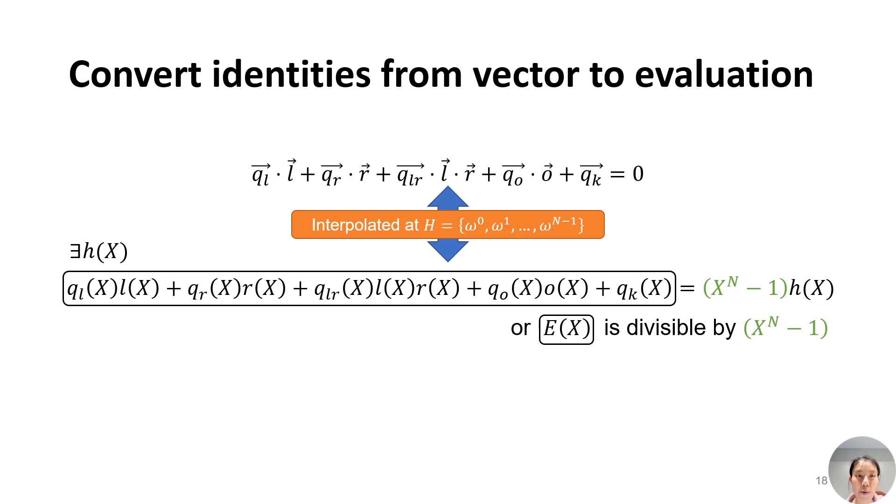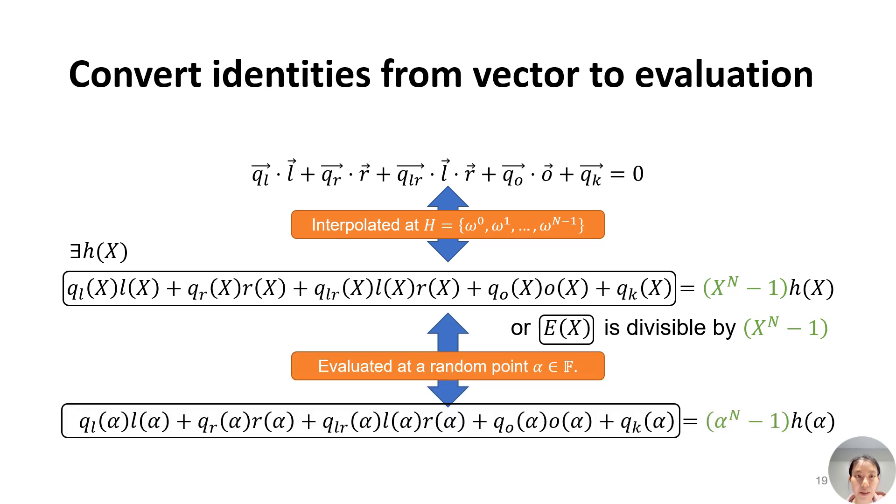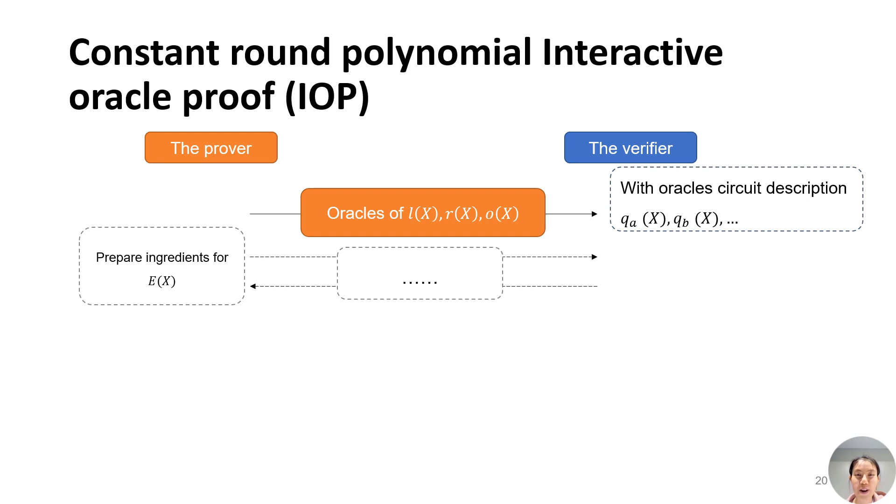From the vector identity, we construct a polynomial where each polynomial is derived from the vector interpolated on the powers of a root of unity. Then, checking the vector identity is equivalent to a polynomial argument saying that there exists some polynomial H such that the polynomial equation can be divided by X to the N minus 1. Finally, by applying Schwartz-Zippel lemma, we can check the polynomial identity on their evaluations at a random point, which can be efficiently handled by the verifier.